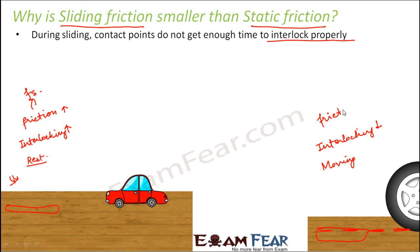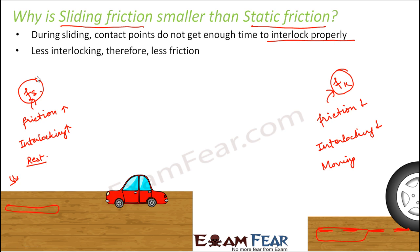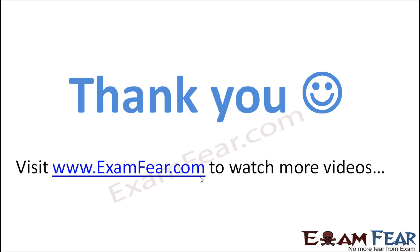Less interlocking means less friction. When the car is moving, the type of friction involved is sliding friction or kinetic friction, denoted as fk. That is why kinetic friction is always lesser than static friction — due to insufficient interlocking during movement. I hope the concepts of static friction and sliding friction are now clear. Next, I will also introduce you to rolling friction.